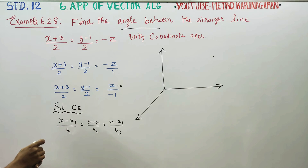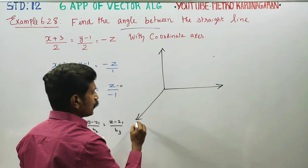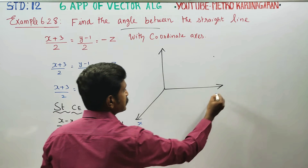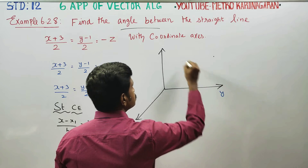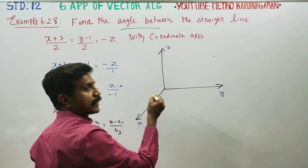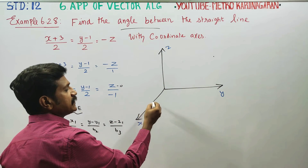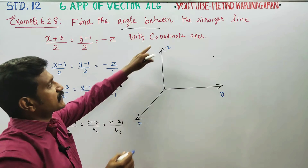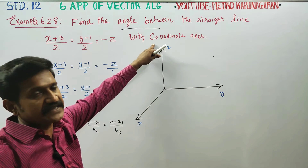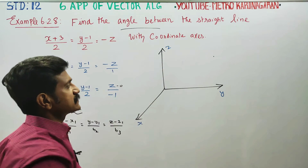This is the match. The coordinate axes are the x axis, y axis, and z axis. The angle made with the x axis corresponds to the x axis, y axis, and z axis respectively.